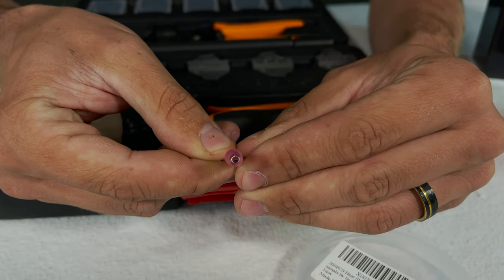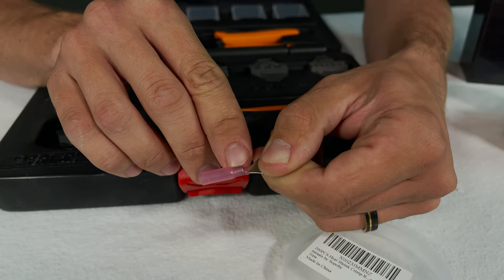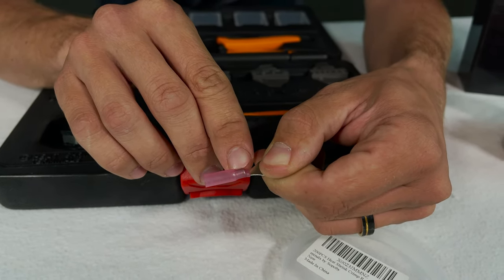And once the wire's in there, we need to use this tool and squeeze down on this metal part so that it can compress onto the wire and make a solid connection.